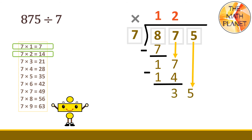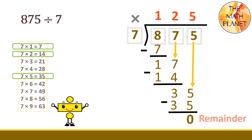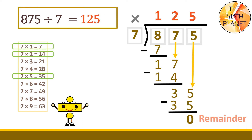And, we'll have 35 divided by 7. So, we will use the fifth rule. 35 divided by 7 equals 5. Write the 5 above the 5. Then, multiply: 5 times 7 equals 35. Then, subtract: 35 minus 35 equals 0. So, our remainder is 0 and the quotient is 125. So, 875 divided by 7 equals 125.